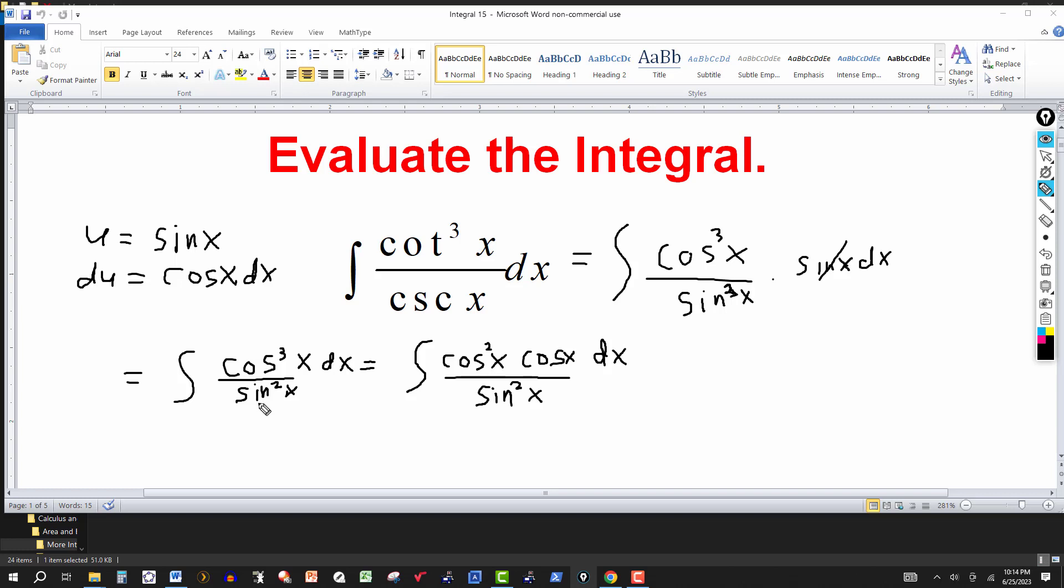So now we need to write everything in terms of u. So just to kind of speed it up here, I know that the sine squared here, that's going to be u squared. And this part right here, cosine dx, that'll be du. And then cosine squared, using the identity cosine squared plus sine squared of an angle equals 1, we can solve cosine squared in this way. So cosine squared is the same thing as 1 minus sine squared of x.